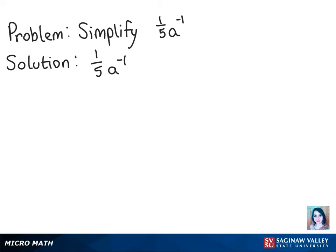Using the properties of exponents, we know that when there is a negative exponent, the base attached to it is under 1. So we can rewrite this as 1 fifth times 1 over a, and then that gets us our final answer after we multiply it together as 1 over 5a.